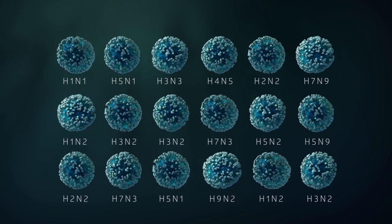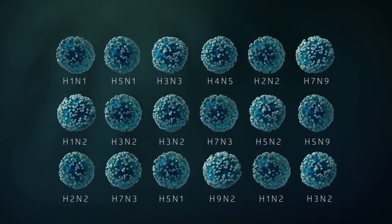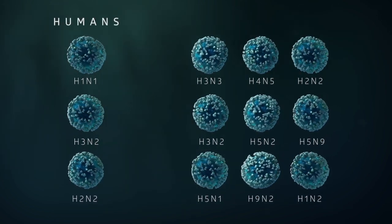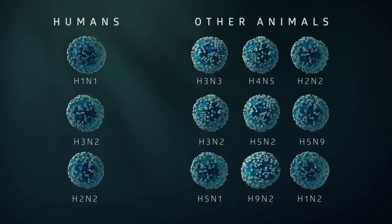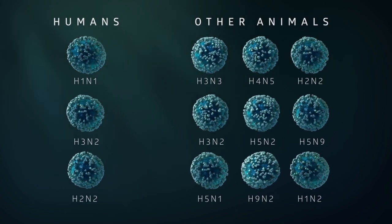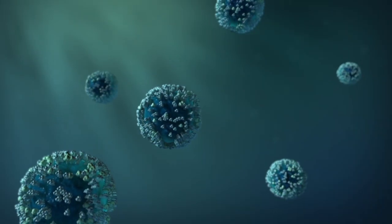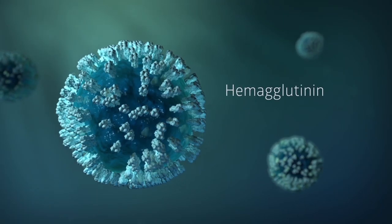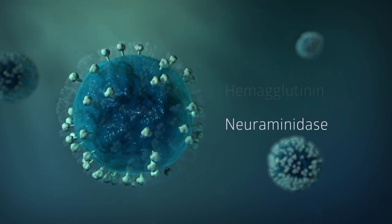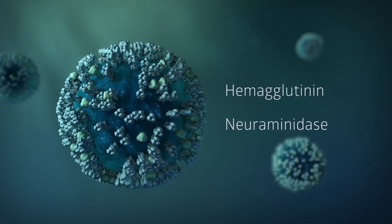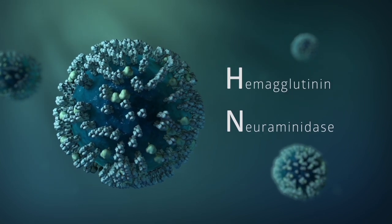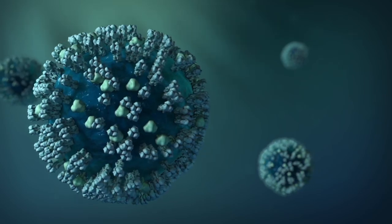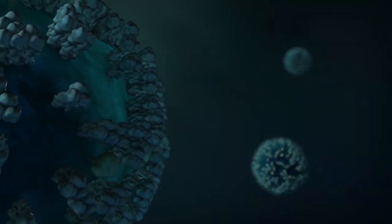A viruses are divided into subtypes, with some infecting humans and others infecting animals, such as pigs and birds. These viruses are named after their surface protein spikes, called hemagglutinin and neuraminidase, better known as the H's and the N's. These structures play an important role in virus infection.